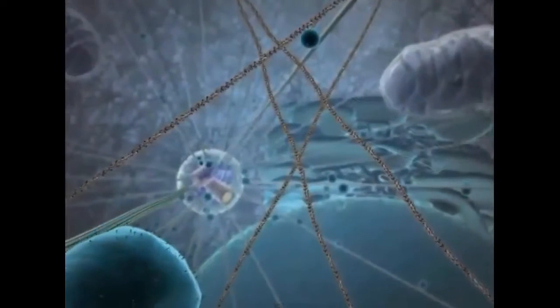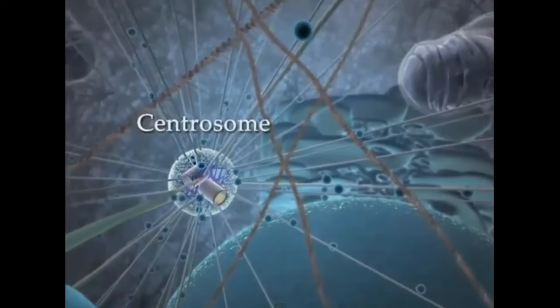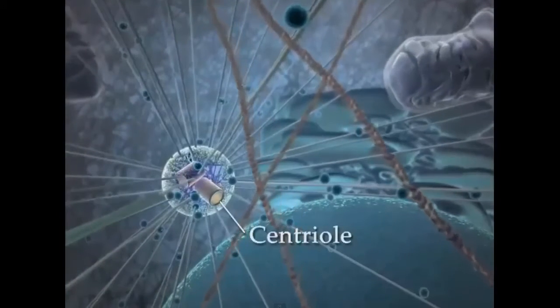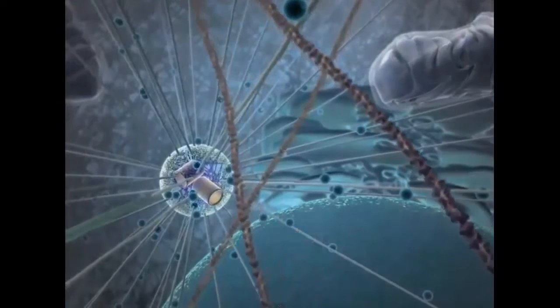All the microtubules originate from the centrosome, a discrete fiber structure containing two orthogonal centrioles and located near the cell nucleus.